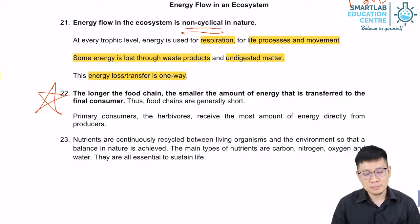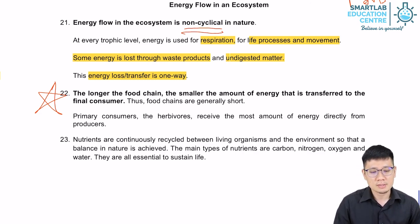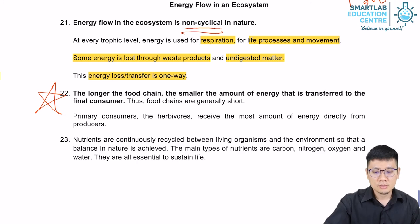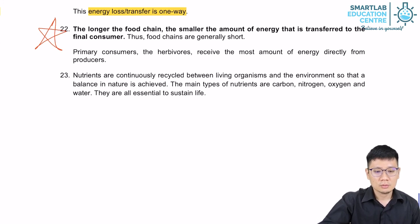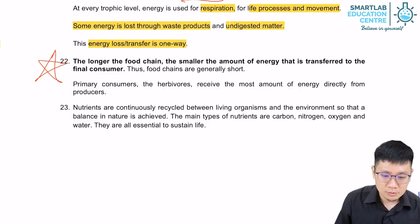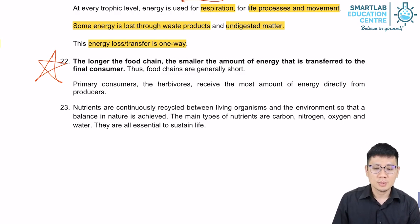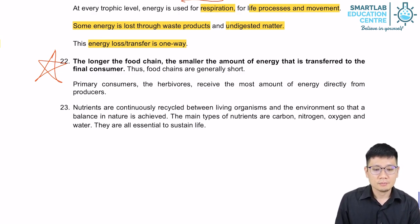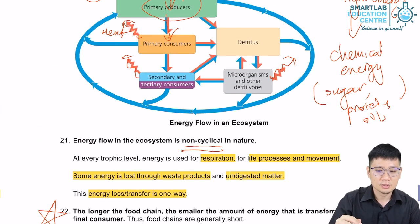The most efficient food chains tend to be ones where more animals are capable of directly eating plants — in other words, herbivores. Herbivores, as primary consumers, receive the most energy directly from the plants. To summarize: nutrients such as carbon, nitrogen, oxygen, and water — atoms, molecules, and ions — are continuously recycled between living organisms and the environment. But energy is not recycled; it is lost as heat and is non-cyclical.